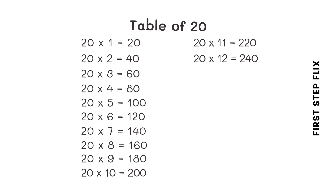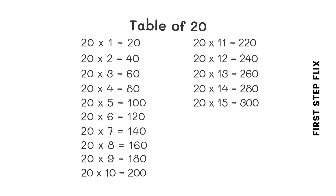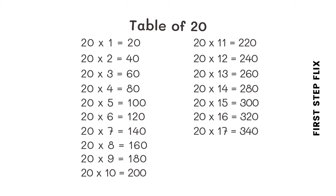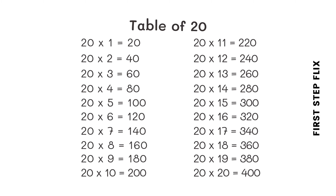20 twelves are 240. 20 thirteens are 260. 20 fourteens are 280. 20 fifteens are 300. 20 sixteens are 320. 20 seventeens are 340. 20 eighteens are 360. 20 nineteens are 380. 20 twenties are 400.